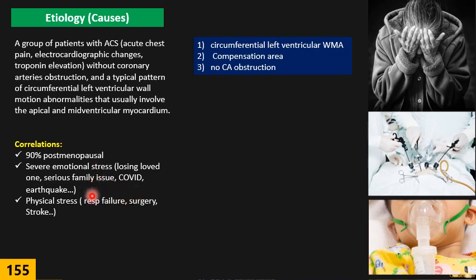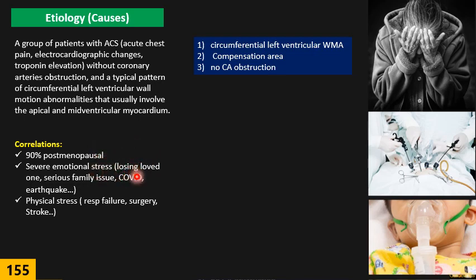Among COVID patients presenting with acute coronary syndrome symptoms in the emergency setting, the incidence of Takotsubo cardiomyopathy is almost two to four percent — double the general population incidence of one to two percent. We can assume that one major reason is emotional stress: even the name of the disease, or fear of a COVID diagnosis, can trigger this type of stress-induced cardiomyopathy.